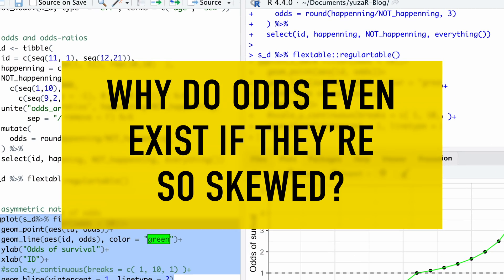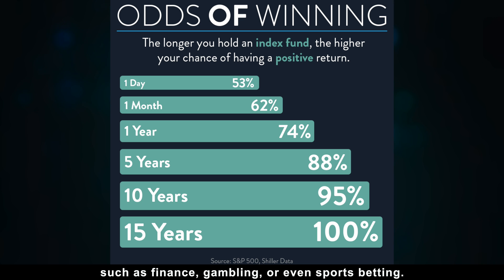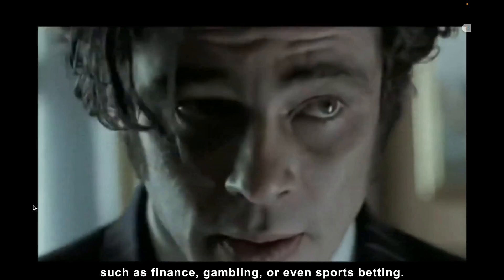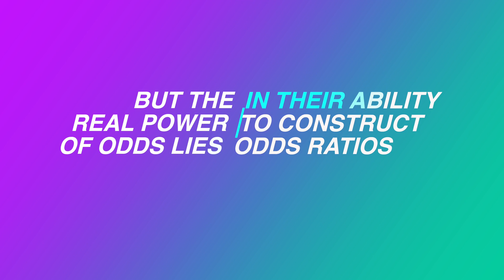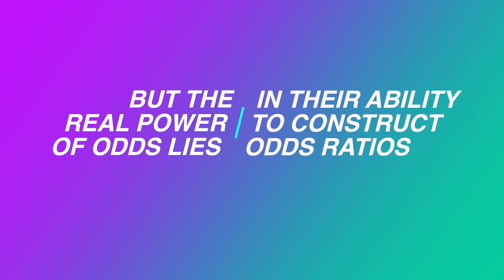This asymmetry can make them challenging to interpret. You might wonder, why do odds even exist if they are so skewed? Well, odds find their sweet spot in specific scenarios such as finance, gambling, or even sports betting.